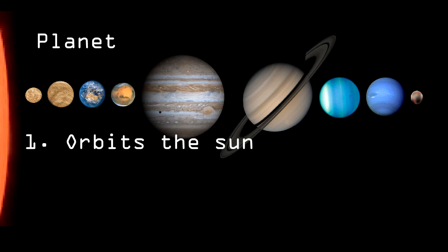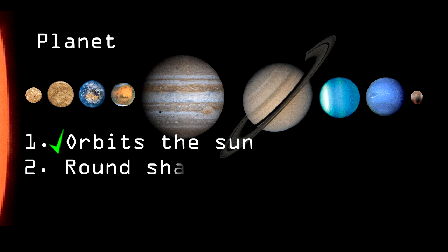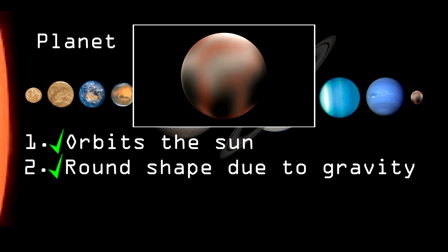One, the planet is in orbit around the Sun. Check. Pluto orbits the Sun. Two, the planet has sufficient mass for its own gravity to pull it into a nearly round shape. Check. Pluto's gravity has made it nearly round.